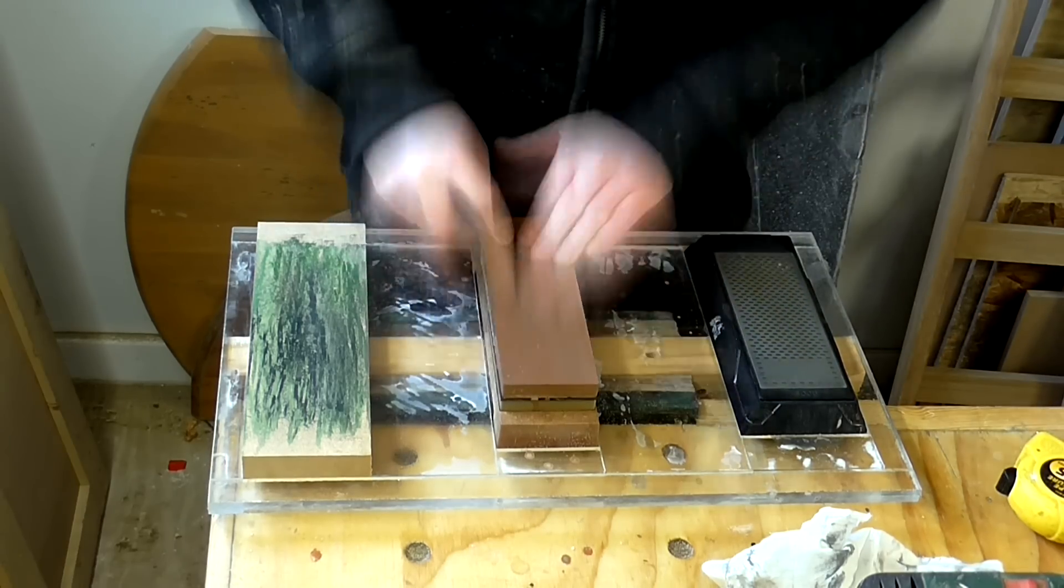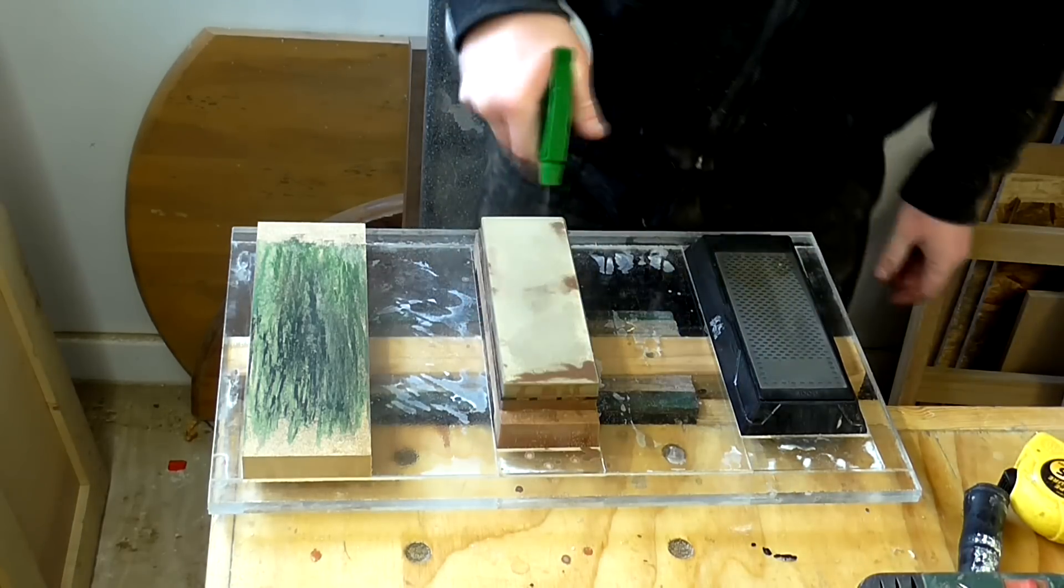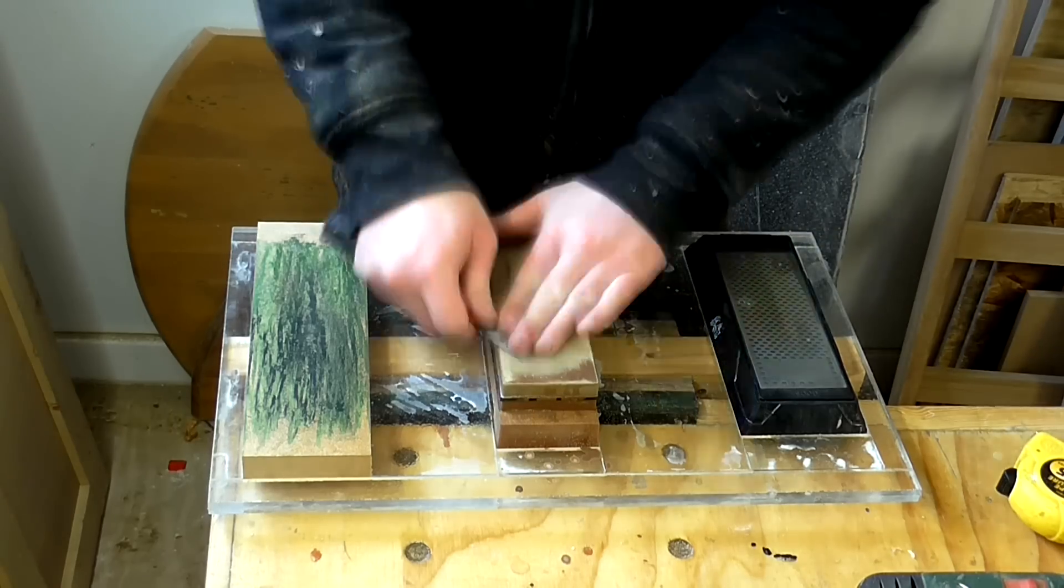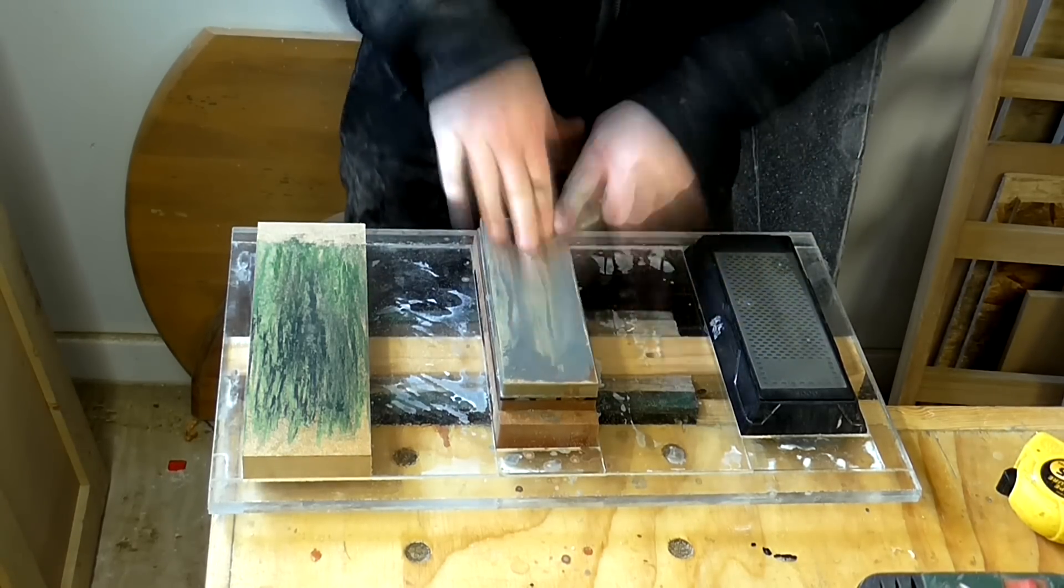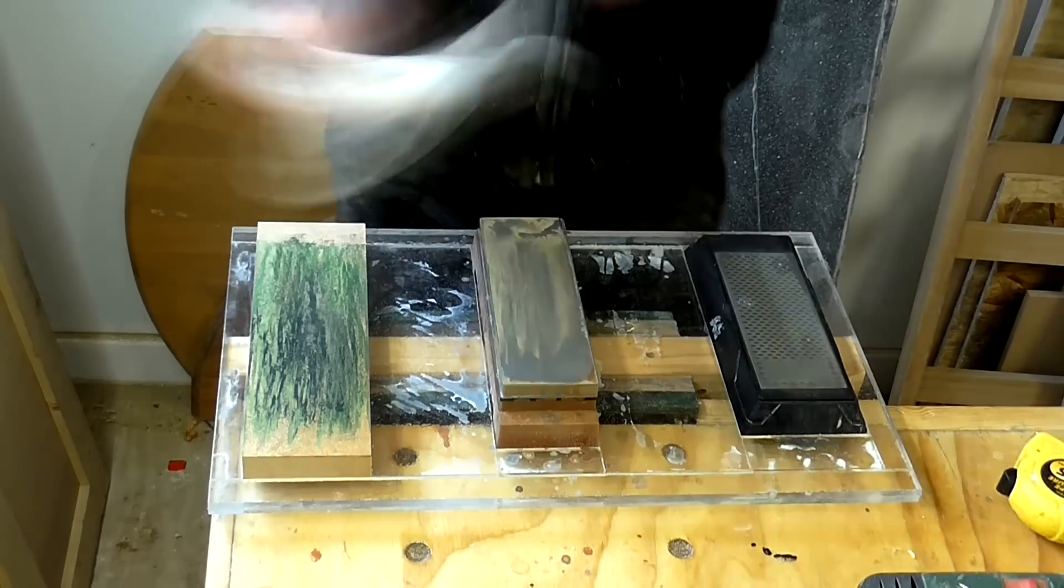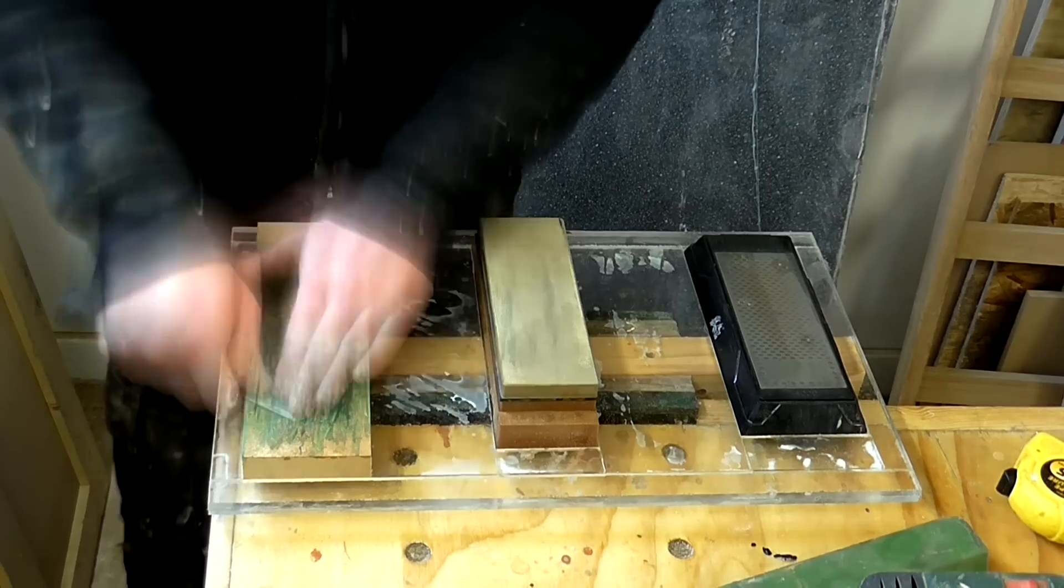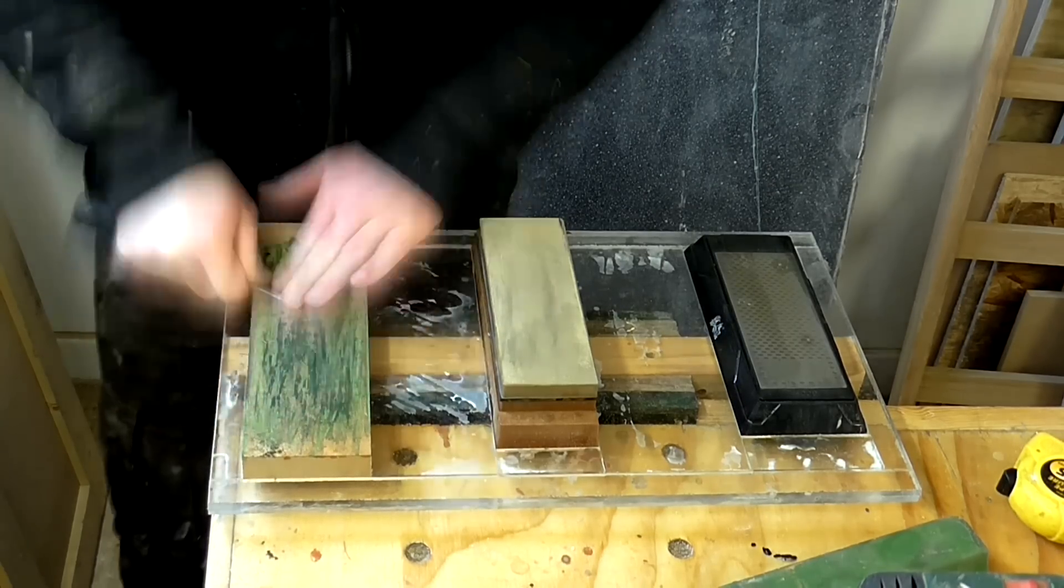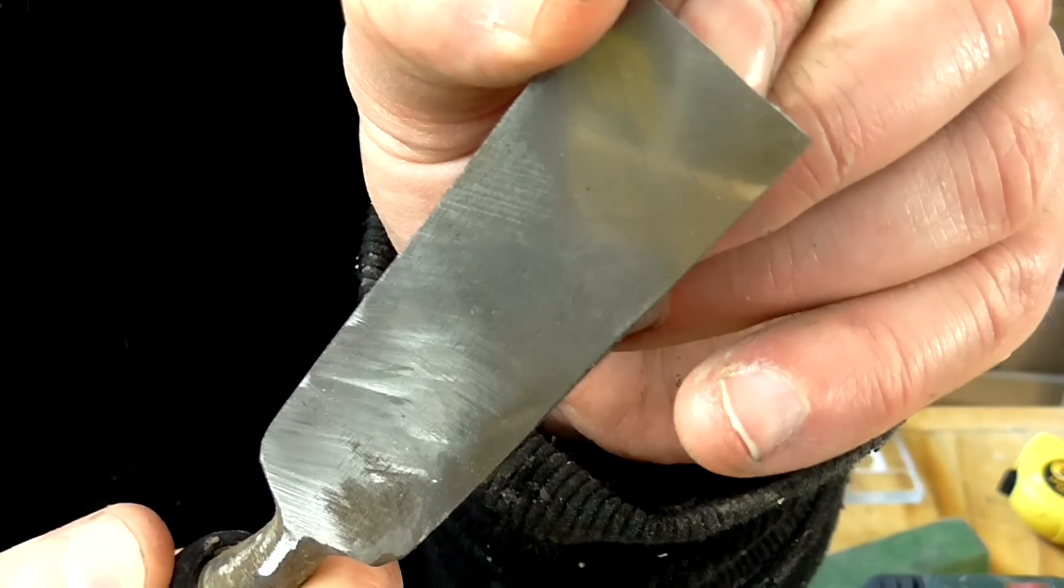Then I use the water stone at 1000 grit and then onto the 6000 grit side. This stone cuts really quickly so I really like using this one. Then I charge the piece of MDF with some polishing compound and polish the back of the chisel. And by this point you can see that I've got a nice mirror finish at the very end of the chisel.